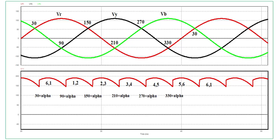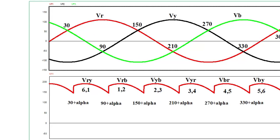The key difference between the three-phase half-wave converter and the full wave converter is that the full wave converter produces six pulses of output voltage across the load, which reduces the ripple. The three-phase half-wave converter produces only three pulses and has comparatively more ripple. The ripple frequency of the full wave converter is six times the fundamental frequency, while for the half-wave converter it is three times the fundamental frequency.